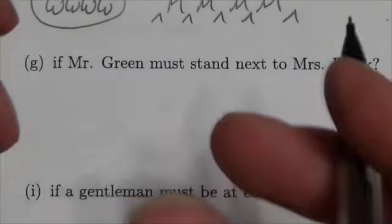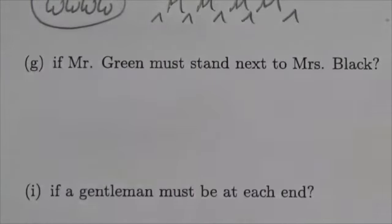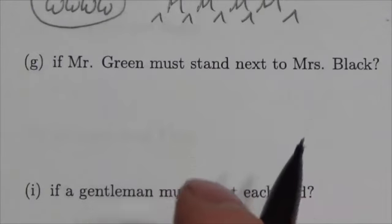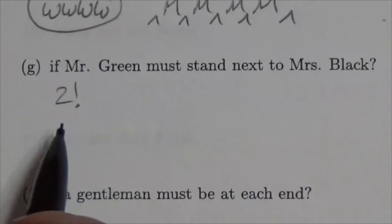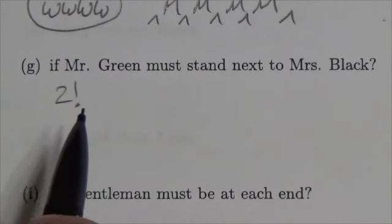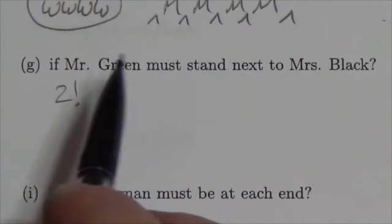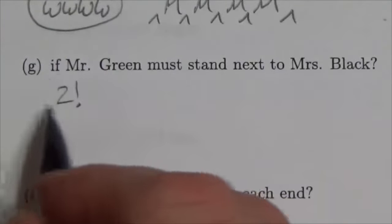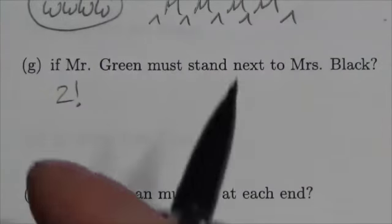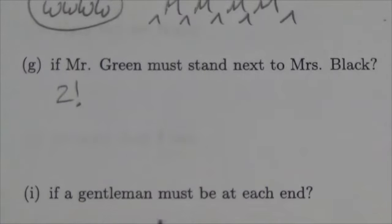So these two are going to form a group. Now there's no reference to anything else here, it's just these two. So there are two factorial ways that those two people could stand together. It doesn't suggest that he has to be on the left of her or she has to be on the left of him, so there's two factorial ways they could stand.